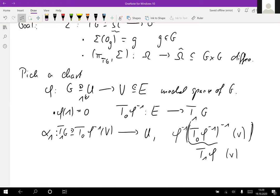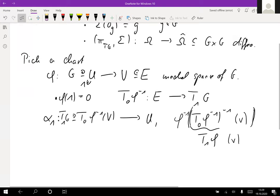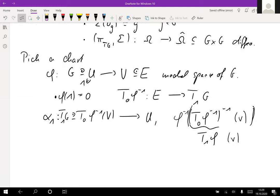This gives us a very nice parameterization of U, something in the tangent space. By construction, this alpha_1 is of course a diffeomorphism.